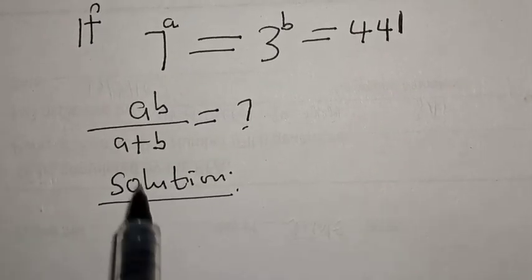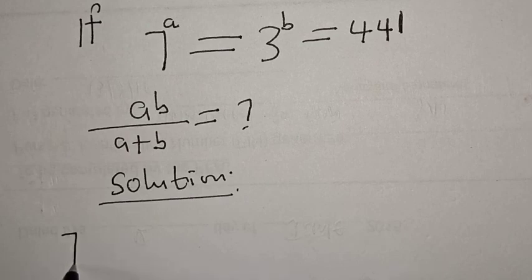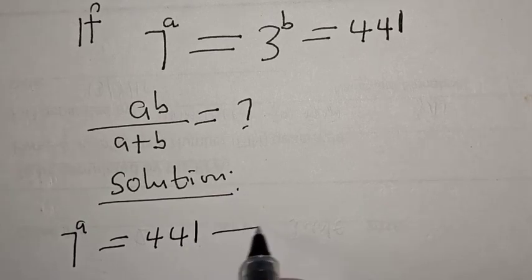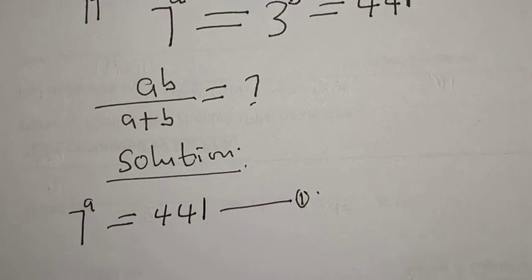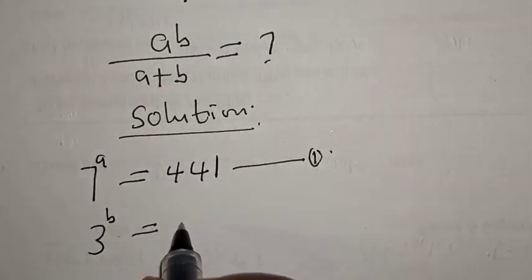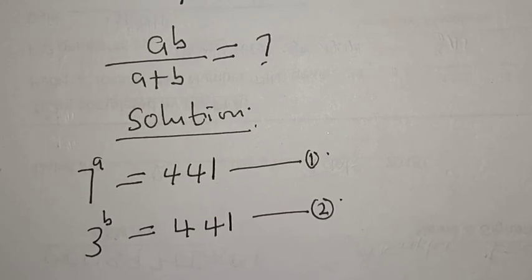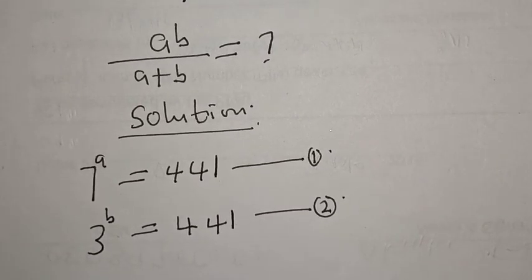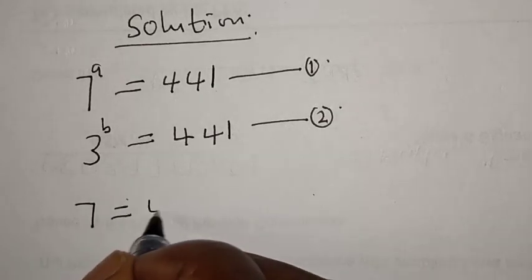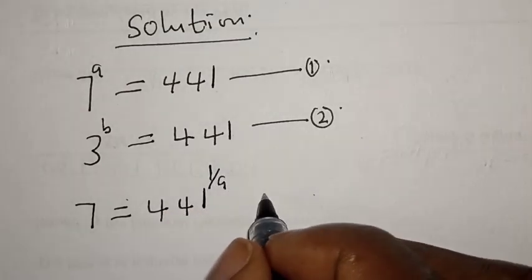From the given equation, 7 raised to power a is equal to 3 raised to power b is equal to 441. This can be written as: 7 raised to power a equals 441 — let's call this equation one. Then we have 3 raised to power b equals 441 — let's call this equation two. This can be rewritten as: 7 equals 441 raised to power one over a — let's call this equation three.